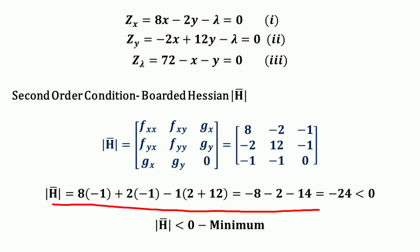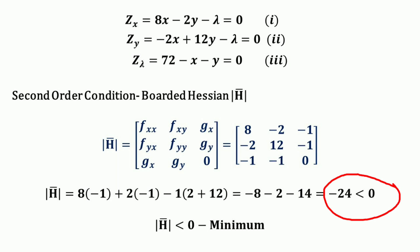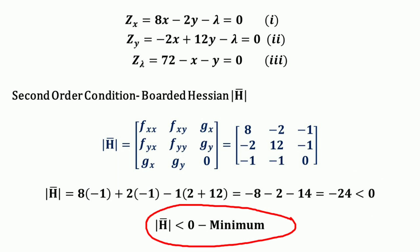Solving this Bordered Hessian gives a determinant value of −24, which is less than 0. Since the determinant value of the Bordered Hessian is less than 0, the function is minimized.